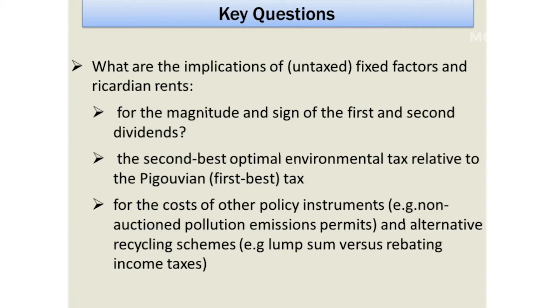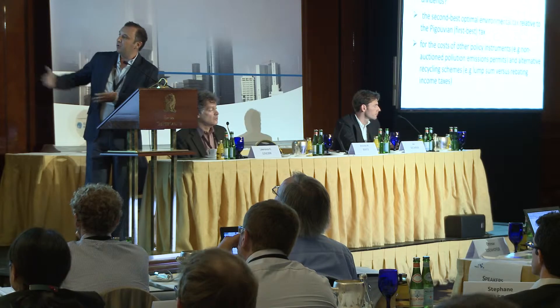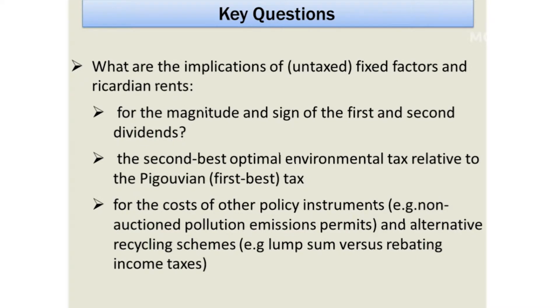So what we are going to do here is to ask three key questions. The first one is: what are the implications of these untaxed fixed factors for the magnitudes and signs of the first and second dividends? We will also examine how the presence of these fixed factors actually alters the primary cost of the policy. The second question is what does all this mean for the setting of the second best environmental tax relative to the Pigouvian tax? And then if we have time, we will also compare the implications for alternative public policy instruments — in particular, the discussion between non-auctionable tradable permits and taxes, as well as alternative recycling schemes such as returning revenues in a lump sum fashion versus rebating income taxes.